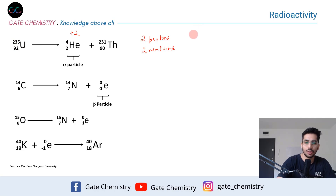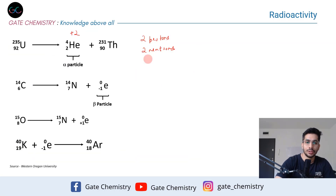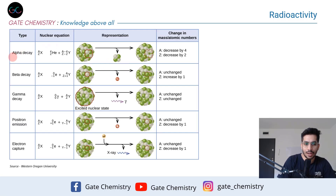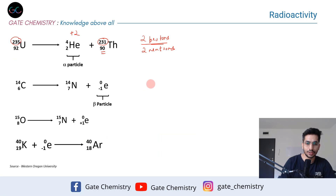Since two protons and two neutrons are removed, the mass number will change by four. You can see that from 235 we go to 231. The atomic number will change by two, because two protons are emitted. So the atomic number is reduced by two and mass number is reduced by four. That is your alpha decay — decrease of four in mass number and decrease of two in atomic number.